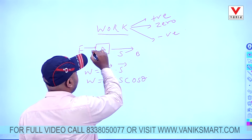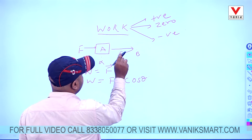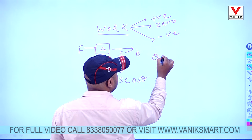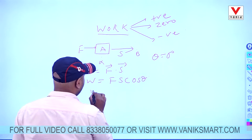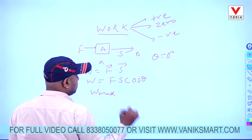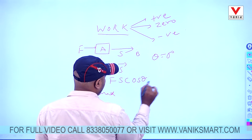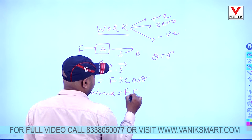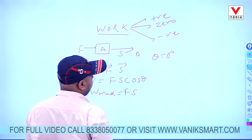So in this case what is happening, the angle between the force and the displacement is zero degree. So when theta is zero degree, you will be obtaining work as maximum work. Why? Because theta is zero degree, you will get cosθ maximum value. So it is simply F into S.